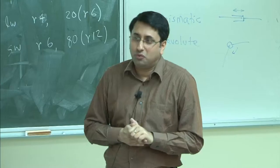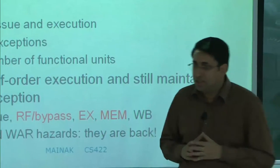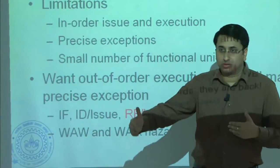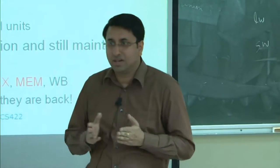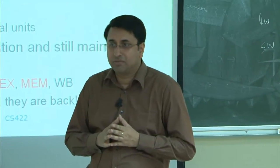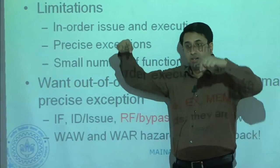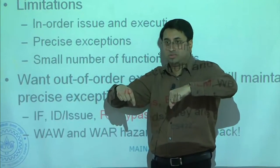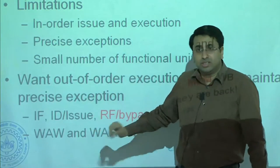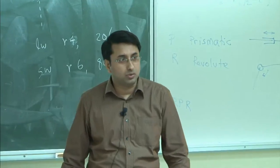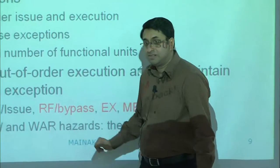I claim I have not only solved the precise exception problem but also the name dependence problems. I am in some way doing renaming. What is the namespace of the instructions now? In the decode phase, the namespace was the register namespace. But after executing, where do I store the value? In the issue queue entry — that becomes a new namespace. Two instructions with the same target register will now get different issue queue slots and store their values in those two slots. These two slots serve as two different names for the same register.